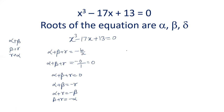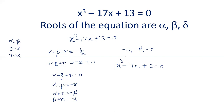So we have to form the equation whose roots are basically minus alpha, minus beta, and minus gamma. The original equation has roots alpha, beta, gamma, and we have to form the equation whose roots are minus alpha, minus beta, and minus gamma. Whenever all the roots are the same but opposite in sign, there is a shortcut: change x to minus x in the original equation.